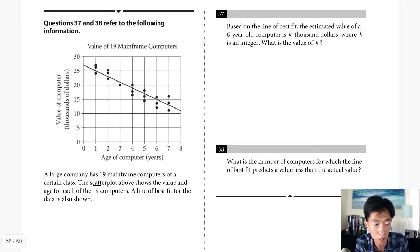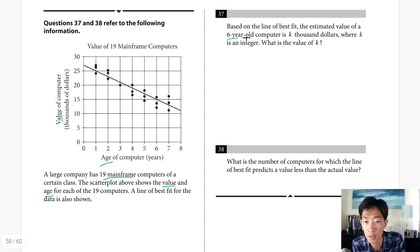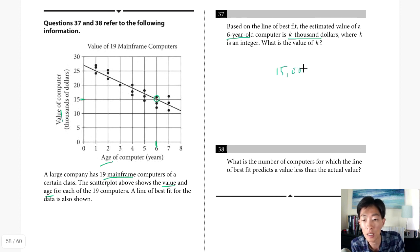Questions 37 and 38 involve a scatter plot of 19 mainframe computers showing value vs. age, with a line of best fit. Question 37: based on the line of best fit, the estimated value of a 6-year-old computer is k thousand dollars. Reading the line at age 6 gives approximately $15,000, so k equals 15.